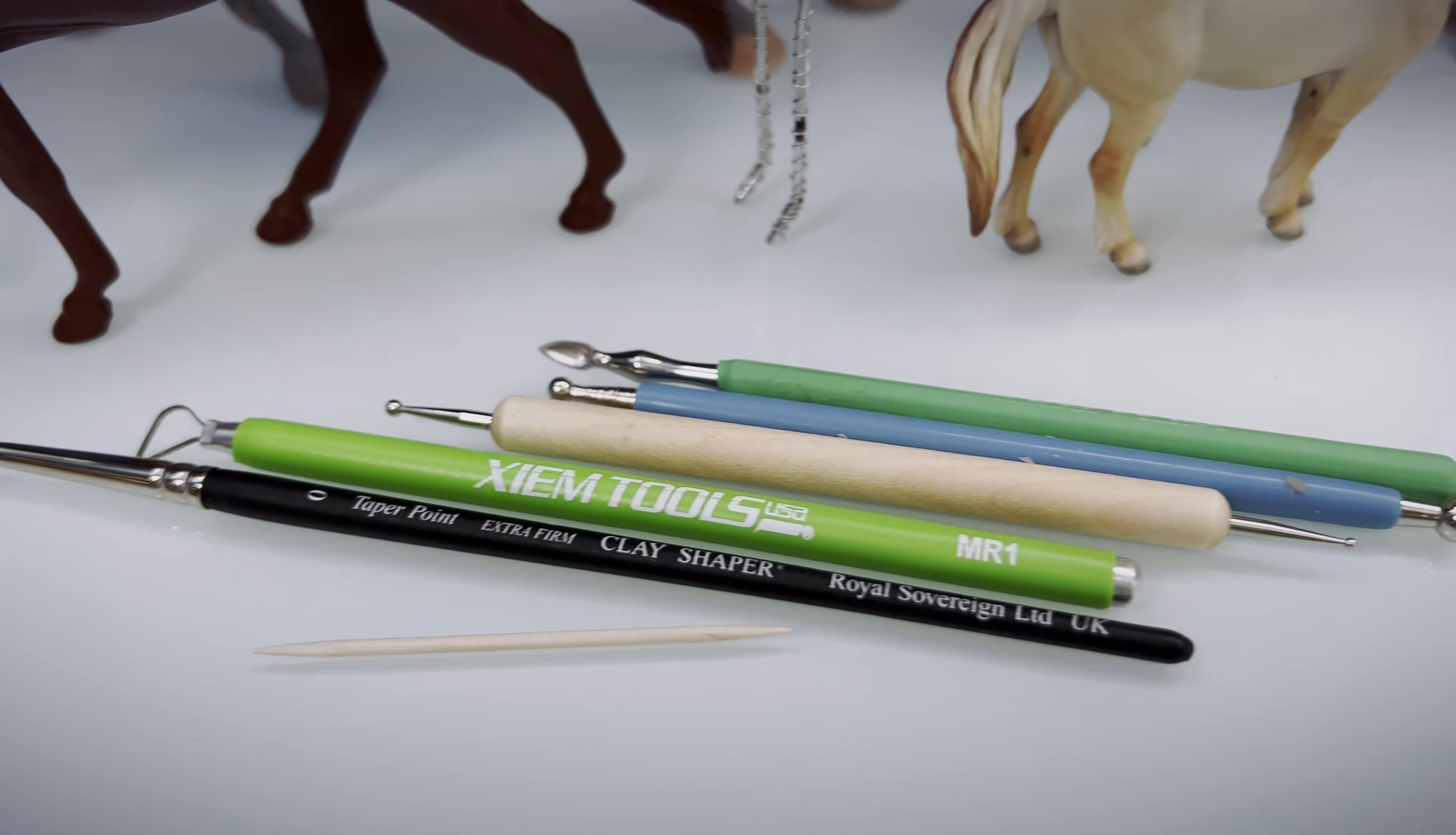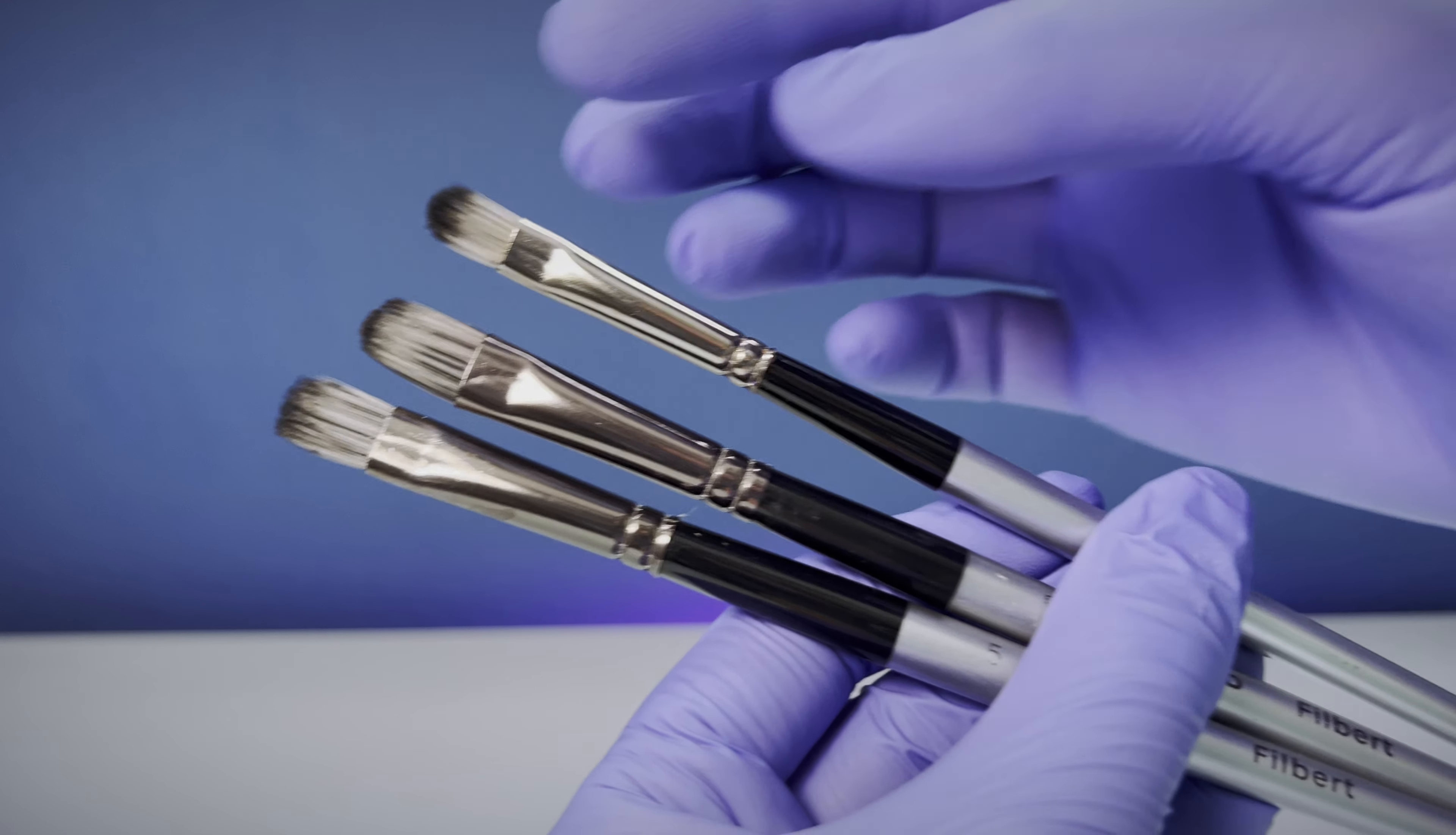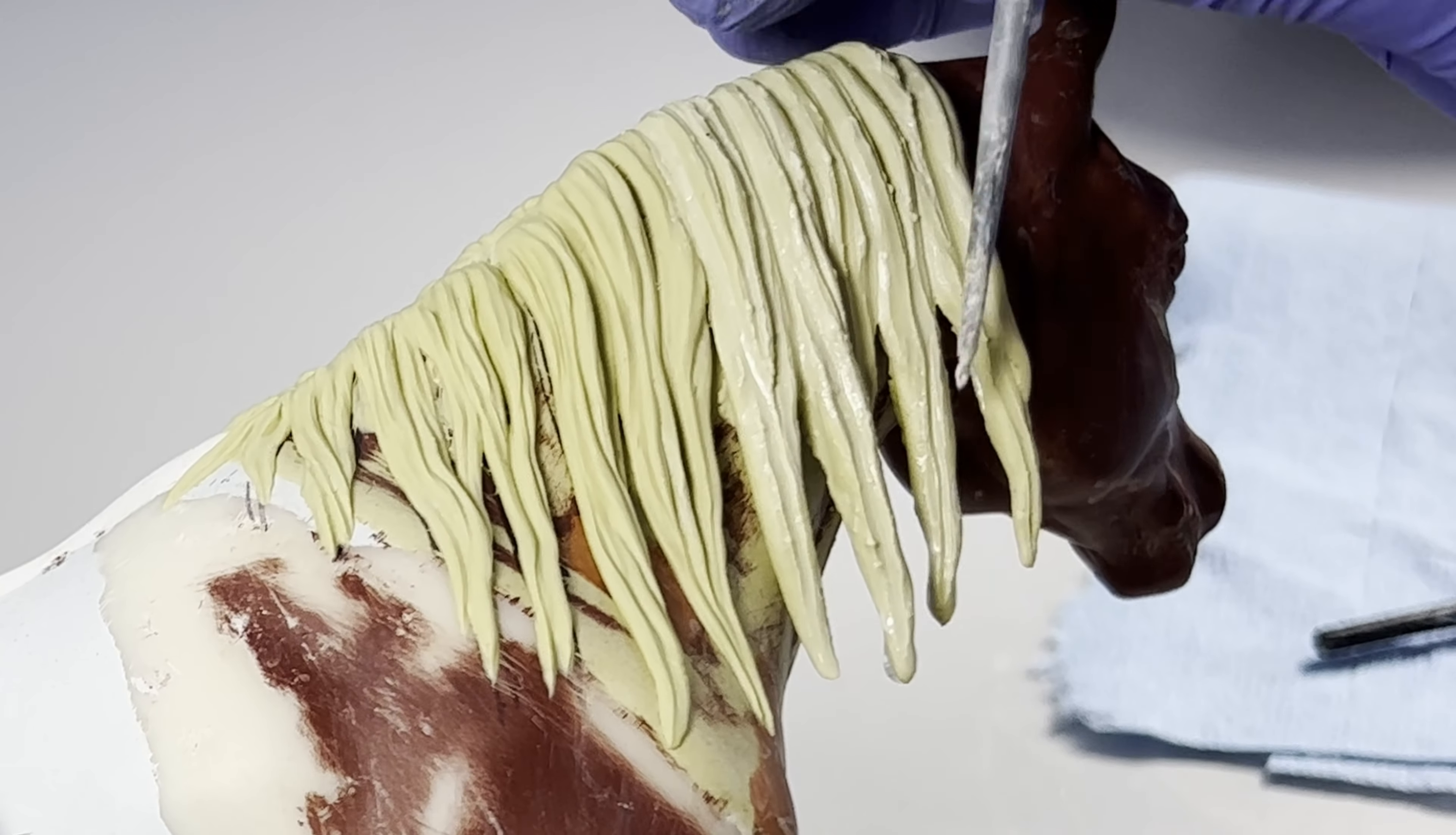In addition to my hands, I like to use different tools like a toothpick, rubber clay shapers, old paintbrushes, wax carving tools, and ribbon tools to help me shape, remove, or detail the clay.